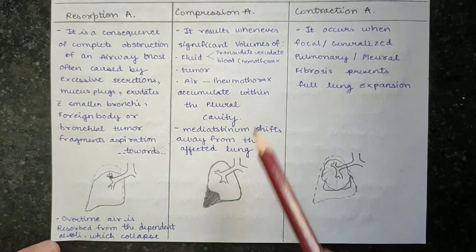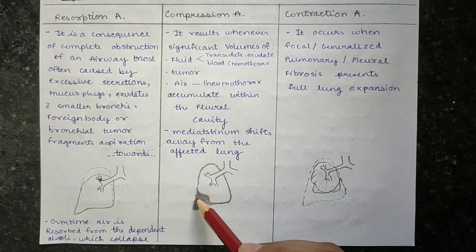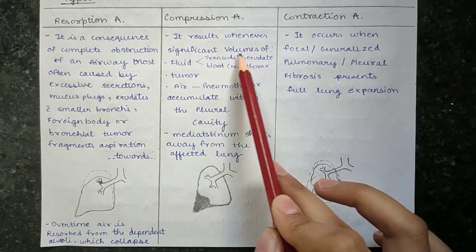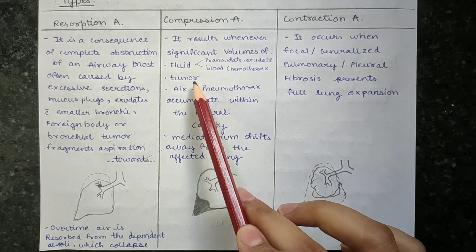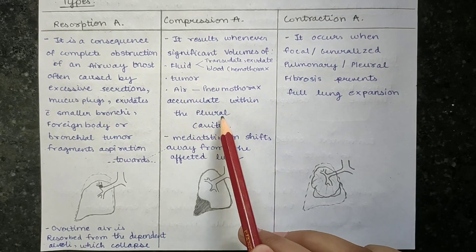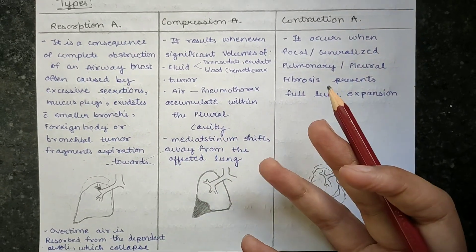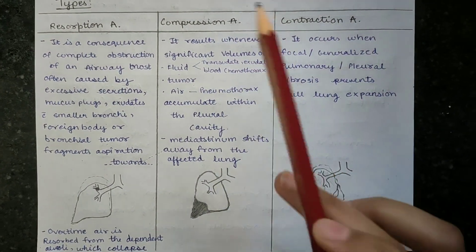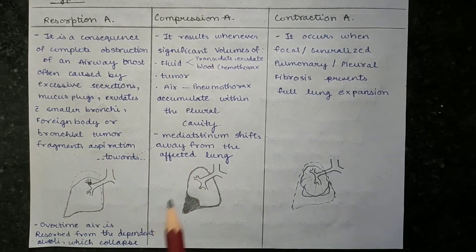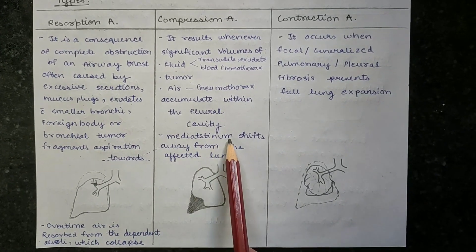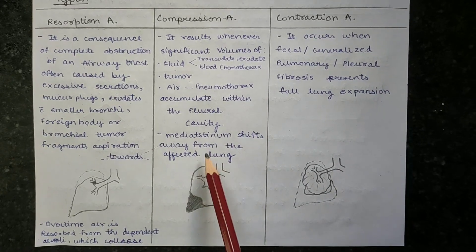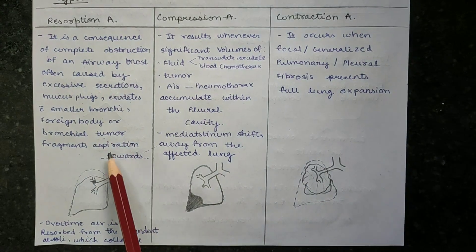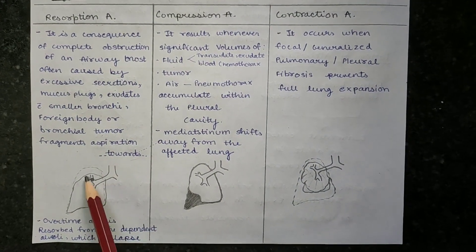Next is compression atelectasis. The lung is compressed, and that is called compression atelectasis. It results whenever significant volumes of fluid, tumour, or air accumulate within the pleural cavity — that means pressure from the outside compresses the lung, leading to compression atelectasis. The main difference between the two: the mediastinum shifts away from the affected lung in compression atelectasis, whereas in resorption atelectasis, the mediastinum shifts towards the affected part.